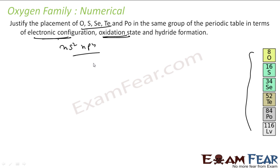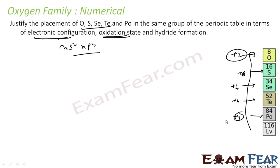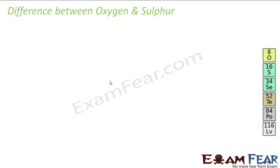Talking about oxidation states: oxygen has a maximum oxidation state of +2, but the other elements (S, Se, Te) have a maximum of +6, while polonium has +4 because of the inert pair effect. So for oxidation states they also have a similar pattern. Also, looking at hydride formation, all of these form H₂E type hydrides — H₂O, H₂S, H₂Se, H₂Te, H₂Po — and they are all volatile hydrides. Thus they have similar properties, and it is justified to keep them in the same group.